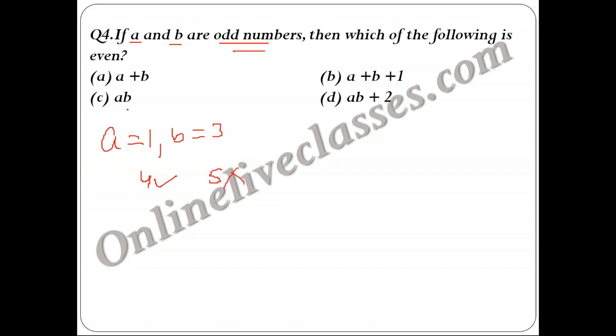Next, option 2: 1 + 3 + 1 would be 5, so that is not the answer. Option C: 1 × 3 would be 3, which is not even. Option D: 1 × 3 will be 3, and 3 + 2 will be 5, so again this is not the answer. You can see that in the first example itself, only one option gave me an even number which matches the condition. Hence option A gives us the answer: a + b.